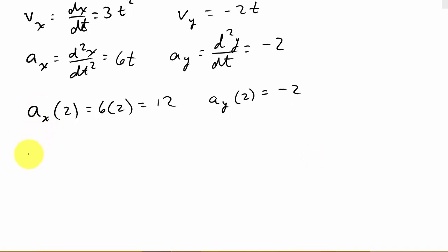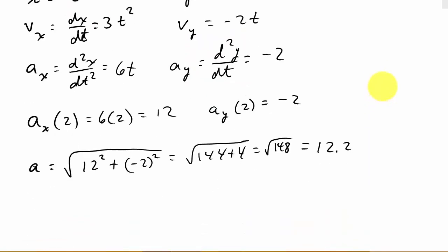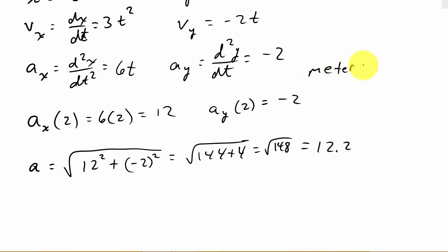The acceleration would be the square root of a_x squared—that's 12 squared—plus a_y squared, which is (-2) squared. That's 144 plus 4, which is the square root of 148. The square root of 148 is, we'll say, 12.2, rounding to 2 decimals. They don't give us units here, but let's suppose we were in meters for distance and seconds for time. That would be meters per second squared.